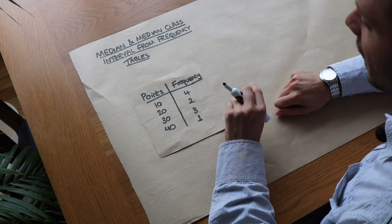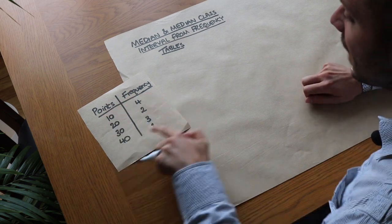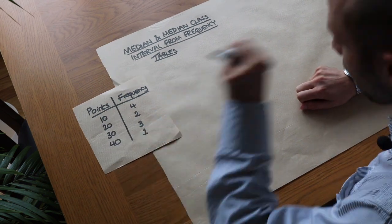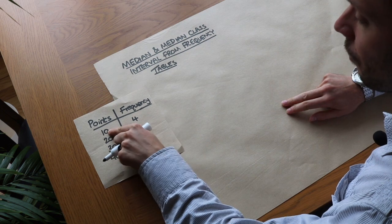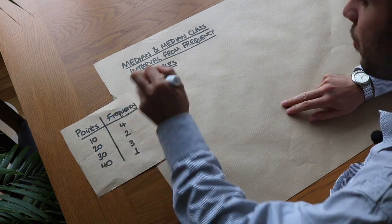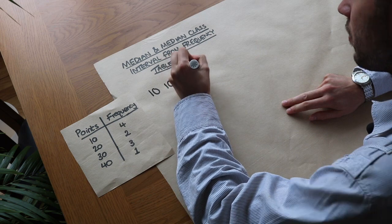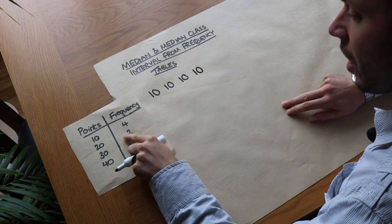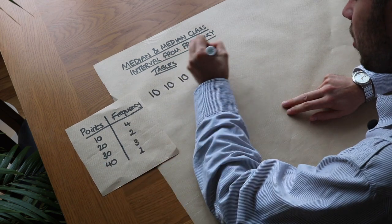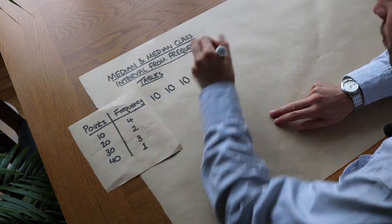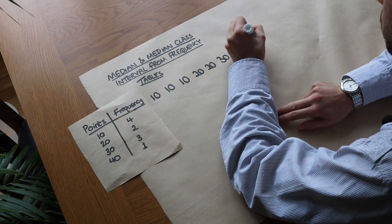If you want to find the median in the conventional way, the long way would be to list out all those values and then find the middle value. So if we list them out: four people with 10 points, so we write 10 four times. Two people got 20 points, so 20 occurs twice, then three people scored 30 and one person scored 40.